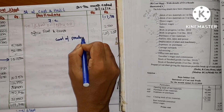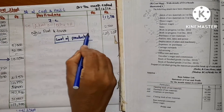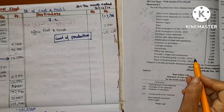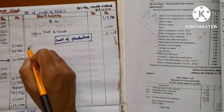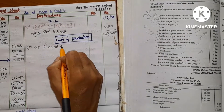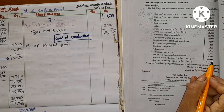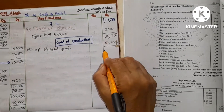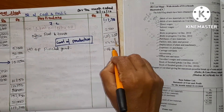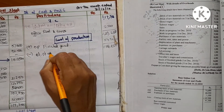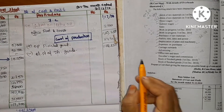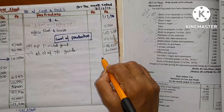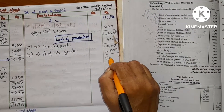Cost of production is 1,20,250. Now for finished goods stock: add opening stock of finished goods 54,000; less closing stock of finished goods 31,000; giving cost of production of goods sold as 1,43,250.